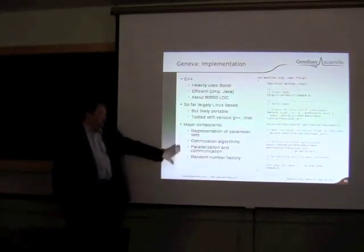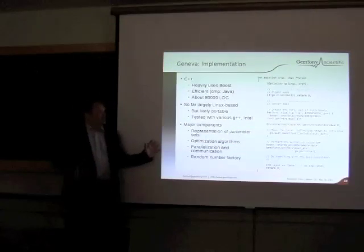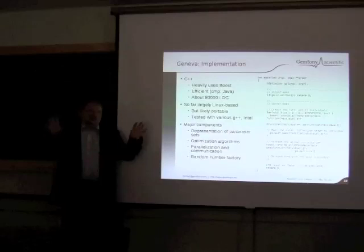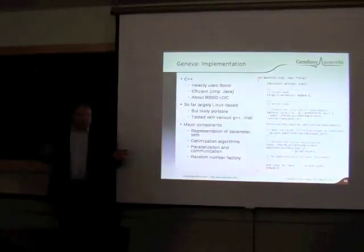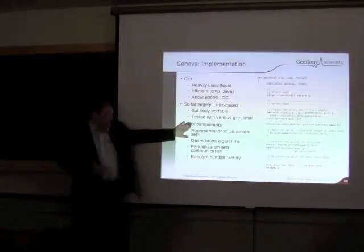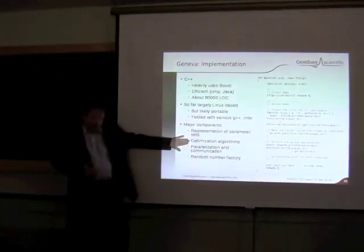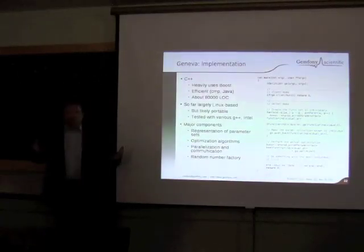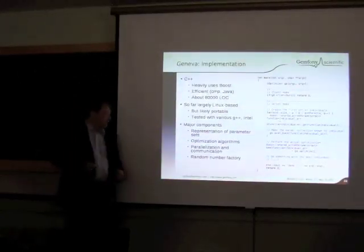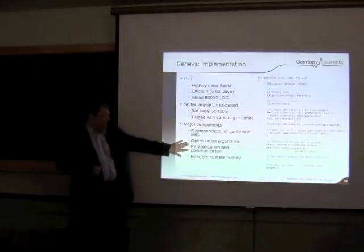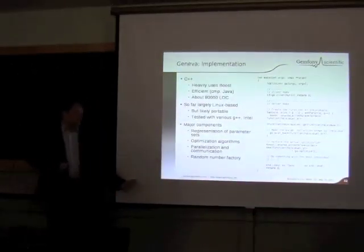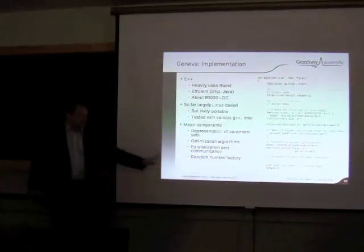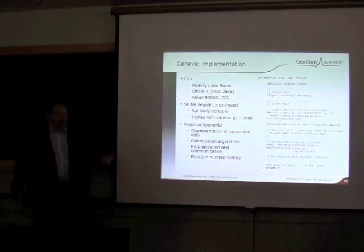Some of the major components: all the code has been separated into different, pretty much independent libraries. We've got the representation of the parameter sets and the optimization algorithms — all different optimization algorithms act on the same structure of parameter sets. We've got parallelization and communication. And there's something called the random number factory. Since I won't talk about that in more detail, let me explain it because I think it's quite cool.